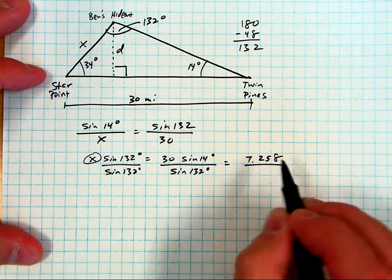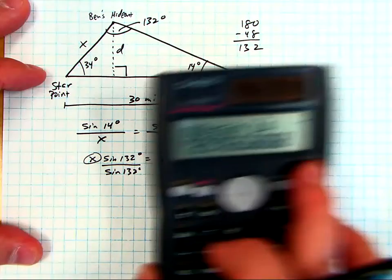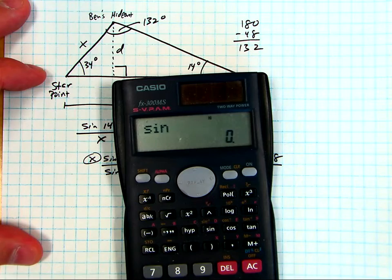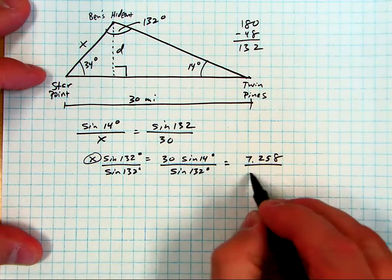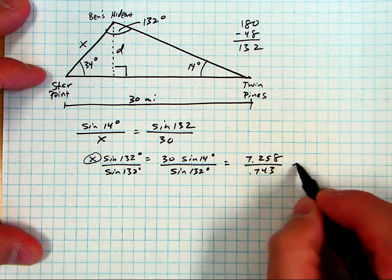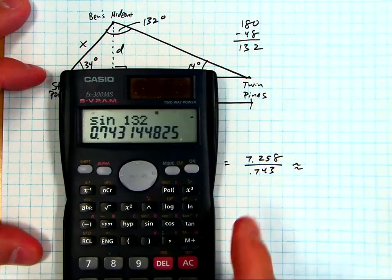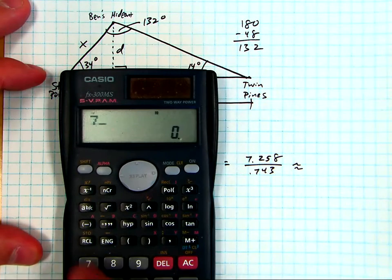7.258 and we'll divide that by whatever the sine of 132 is. So sine of 132 equals 0.743, and we'll put those numbers into the calculator again. 7.258.